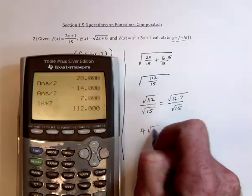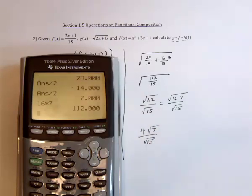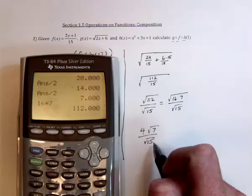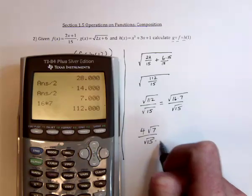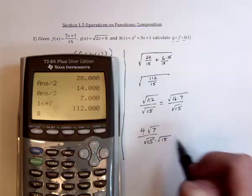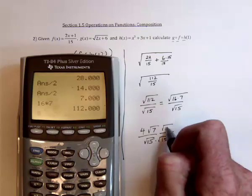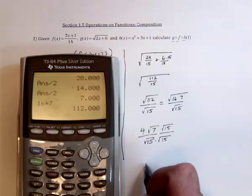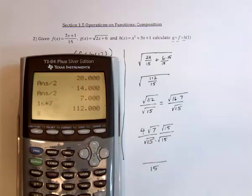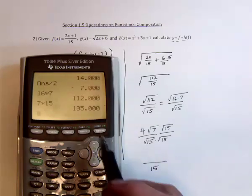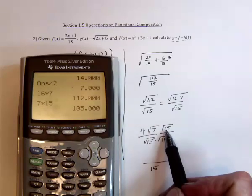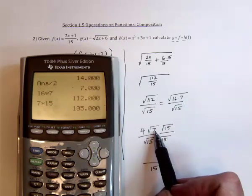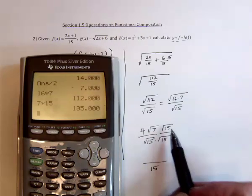So we've got 4 radical 7 over radical 15. The last thing to do is rationalize the denominator. To get rid of the radical in the denominator, multiply by the square root of 15 — but if you do that for the denominator, you need to do it for the numerator too. So the denominator is going to be 15. For the numerator, we've got 7 times 15, which is 105. I know 105 won't have any perfect squares, because it's made up of 3, 5, and 7 — nothing shows up twice.